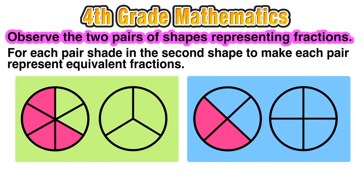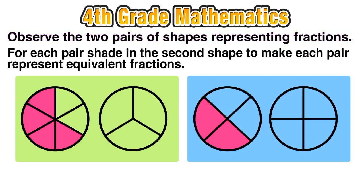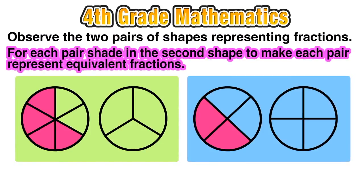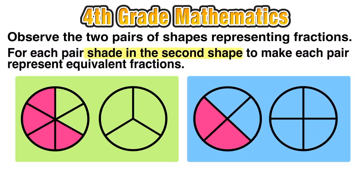Let's start by observing the diagrams below that show two pairs of shapes representing fractions. For each of those separate diagrams, we want to shade in the second shape to make each pair represent equivalent fractions. In other words, we have to color in each figure on the right side of the diagram to make it an equivalent fraction to the figure on the left side of the diagram.